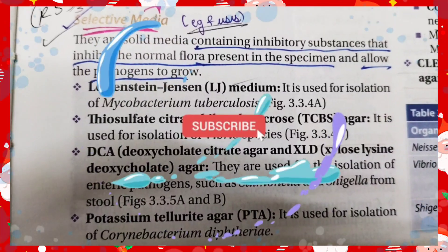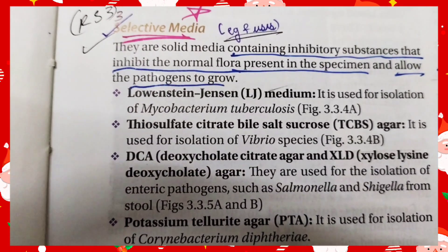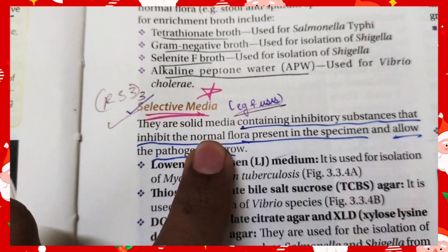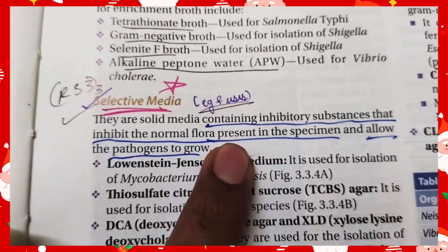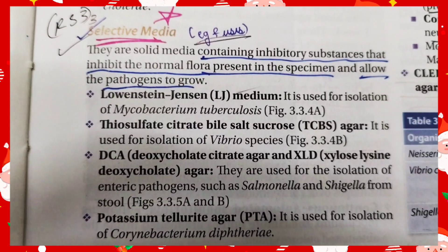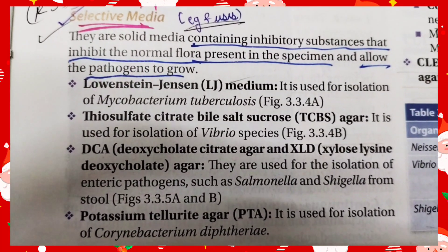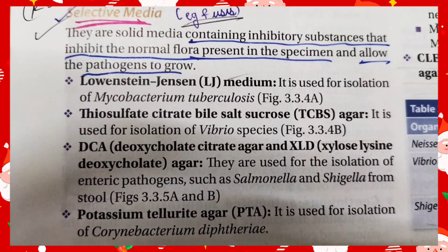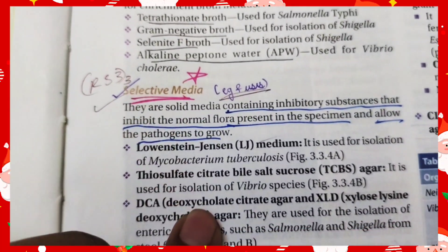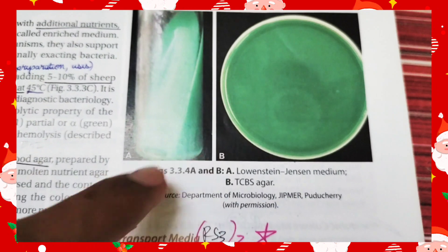Selective media is a solid medium containing inhibitory substances that inhibit the normal flora present in a specimen and allow pathogens to grow. Since our goal is to grow pathogens, we inhibit the normal flora by adding inhibitory agents. Examples include: Löwenstein-Jensen medium for Mycobacterium tuberculosis, TCBS agar (thiosulphate citrate bile salt agar) for Vibrio species, DCA (deoxycholate citrate agar) and XLD (xylose lysine deoxycholate agar) for Salmonella and Shigella, and potassium tellurite agar for Corynebacterium diphtheriae. Here you can see the LJ medium and TCBS agar.